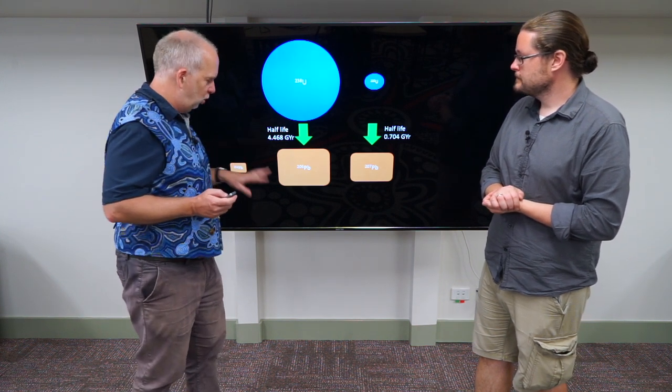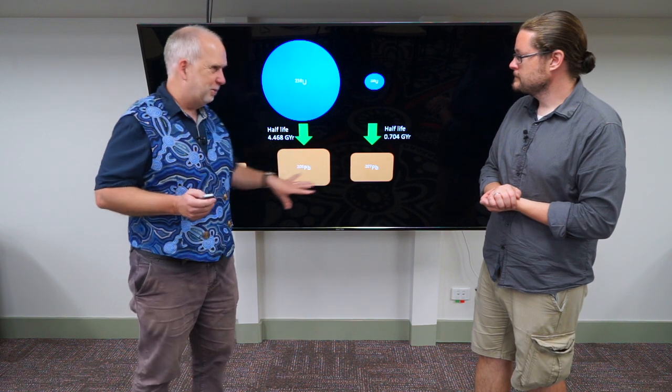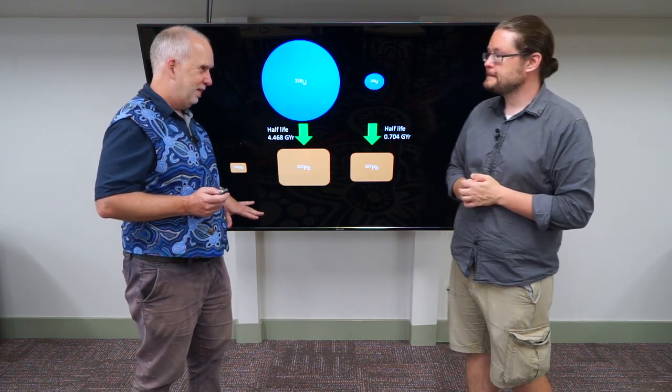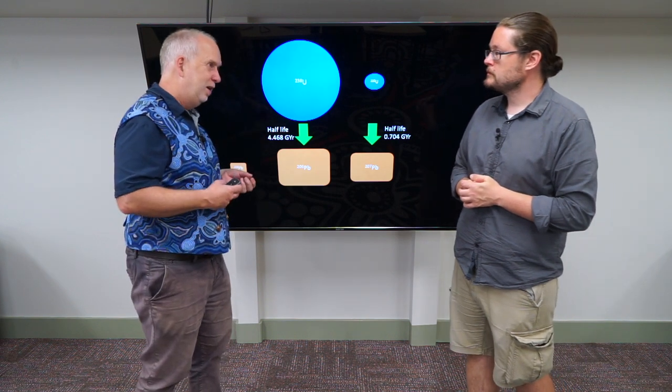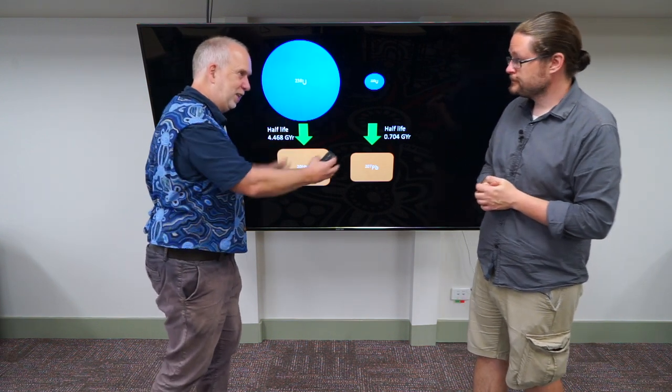Now, the problem with doing this is we don't really know exactly how much of these different types of lead there was to begin with. That's right. If we knew how much there was to begin with, we could see how much there is now, and work out how much of this decay must have happened.